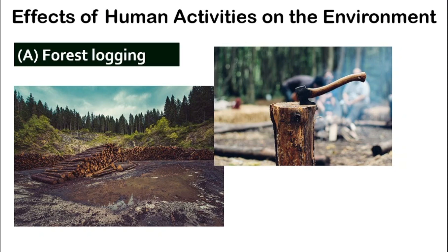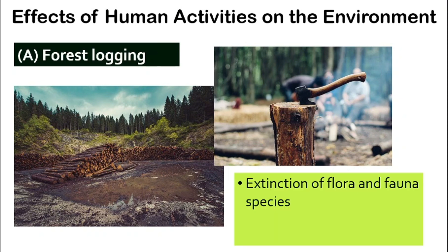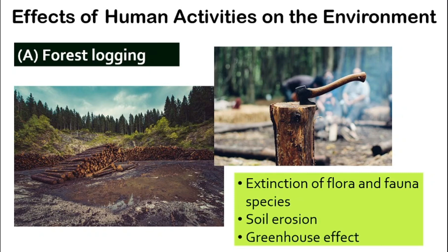First, as you can see from the picture here, is forest logging — meaning we cut down trees. What are some of the effects? Number one is the extinction of flora and fauna species because we destroy their habitat. Next is soil erosion, because if we keep cutting down trees, there are no roots to hold the soil together, so the soil becomes loose. And also the greenhouse effect — trees and green plants help by carrying out photosynthesis, using up carbon dioxide. So plants are very important and forest logging is a serious matter.